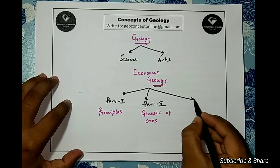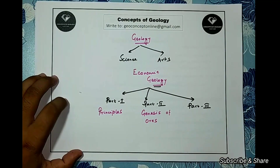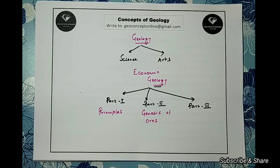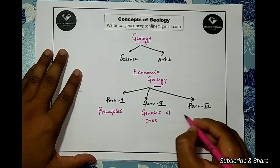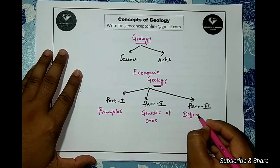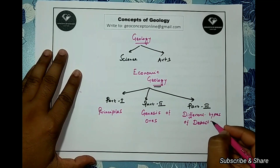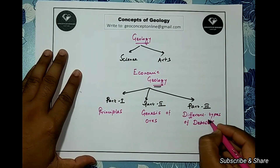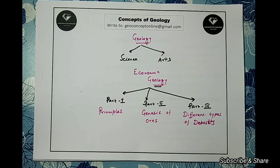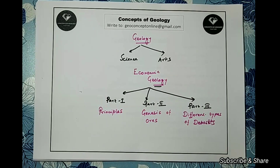Part 3 will be some more focused topics on different types of deposits — specialized deposits such as banded iron formations, podiform chromite deposits, porphyry copper deposits, or manganese nodules. We will discuss their appearance, their origin, etc., in detail in Part 3.